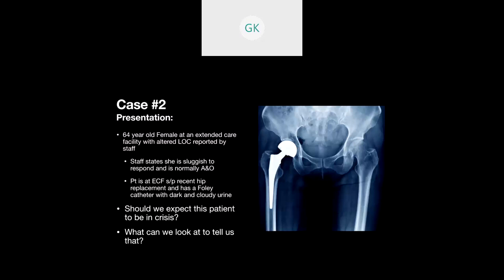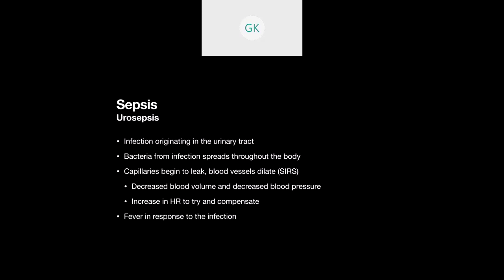Let's talk about our next case. It's a 64-year-old female at an ECF, altered level of consciousness by the staff. Say that she's sluggish to respond, normally alert and oriented, no problems. She's at the ECF after a hip replacement, has a Foley catheter with dark cloudy urine in it. So should we expect this patient to be in crisis? And what can we look at to tell us that? Well, what do we think this patient's having? Well, this patient's probably in sepsis, more specifically, urosepsis. So not uncommon, especially with Foley catheter placements for bacteria to get inside the urinary tract and again, multiplying and spreading. So bacteria from that infection spreads throughout the body.